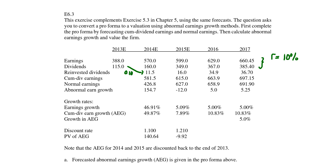Then you follow the same procedure for the 2014 dividend. If you reinvest, you should get 16.349 multiplied by 0.1, and similarly for each following year multiplied by 0.1. That gives you the reinvested dividend for each year.